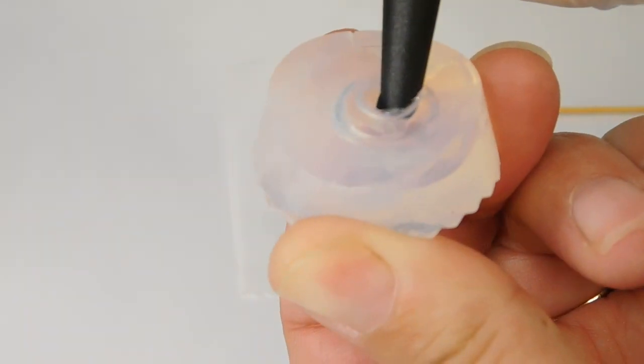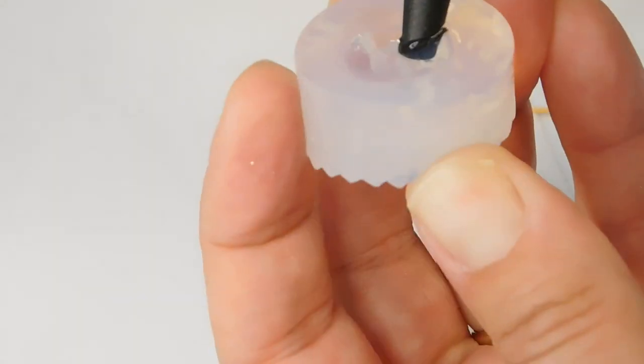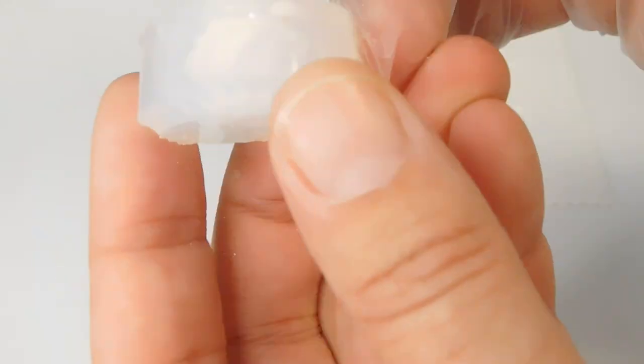Another way to make a breastmilk bead is fill the mould with clear resin then spoon the powder directly on top. Use the cocktail stick to push it into the clear resin.